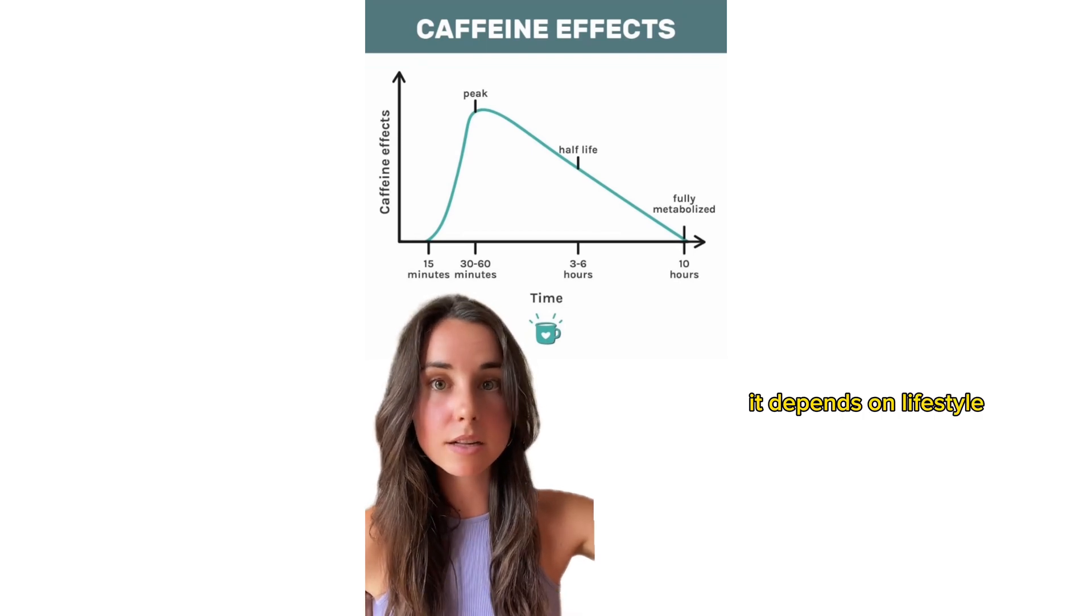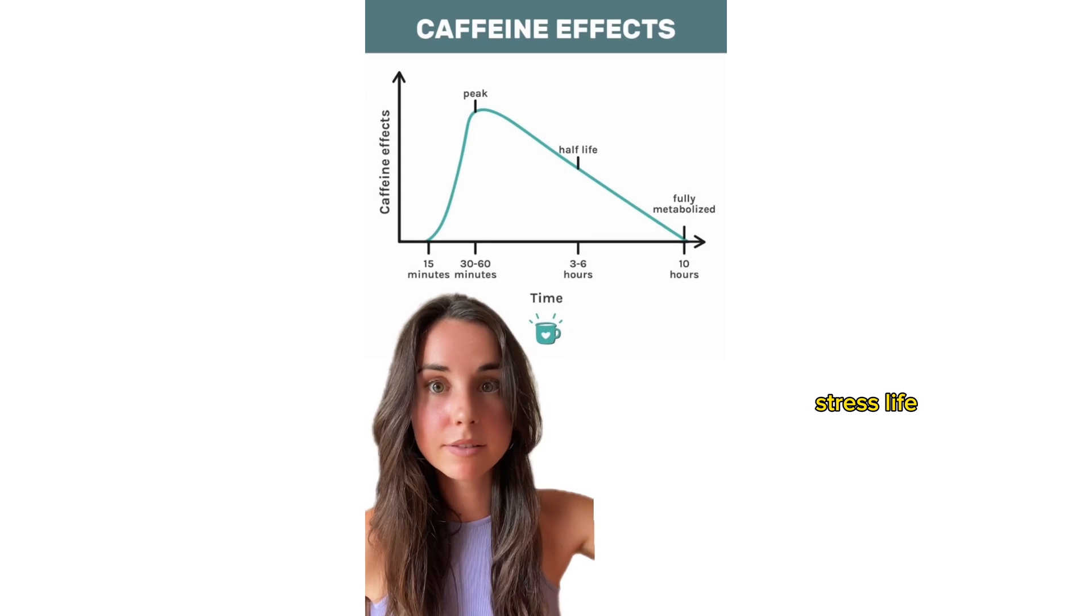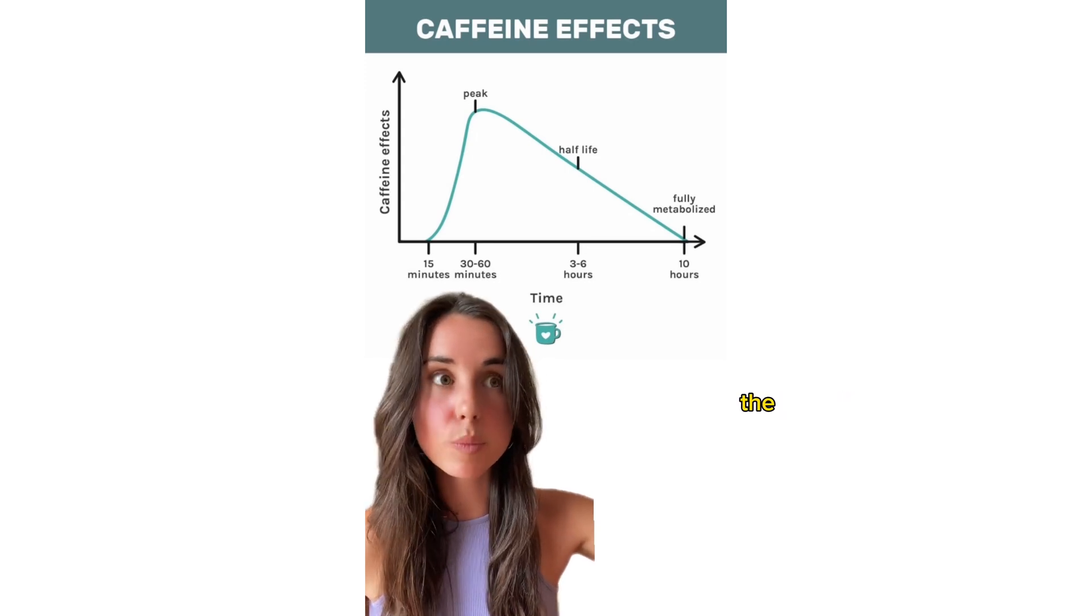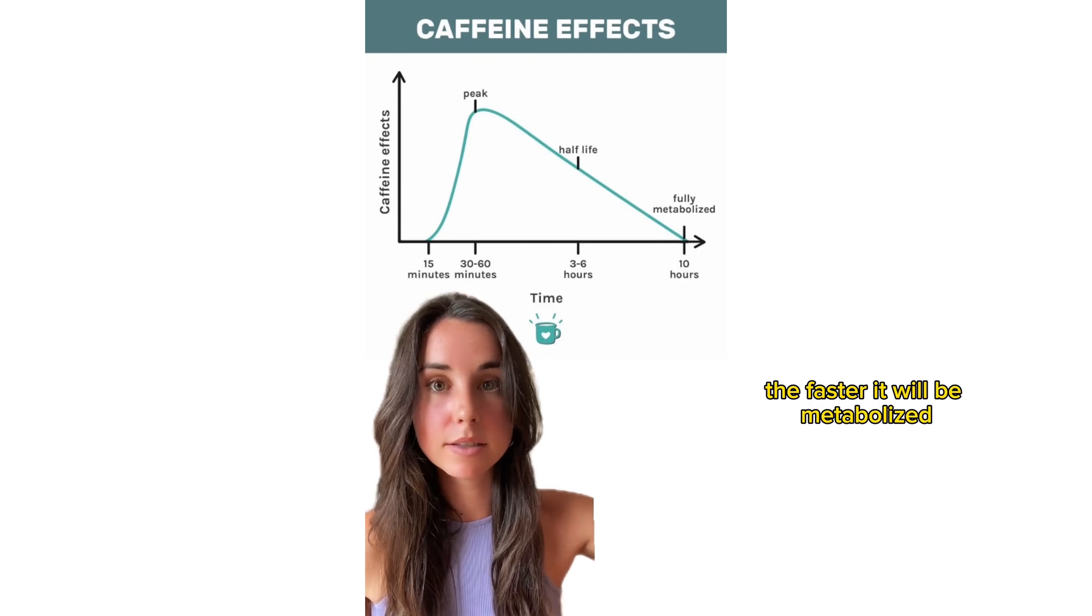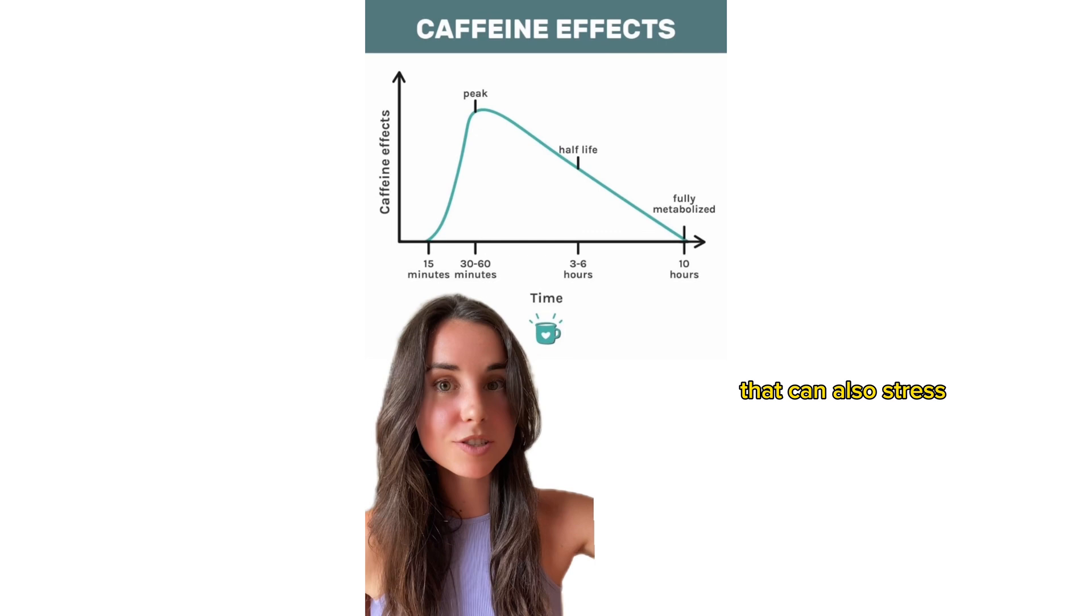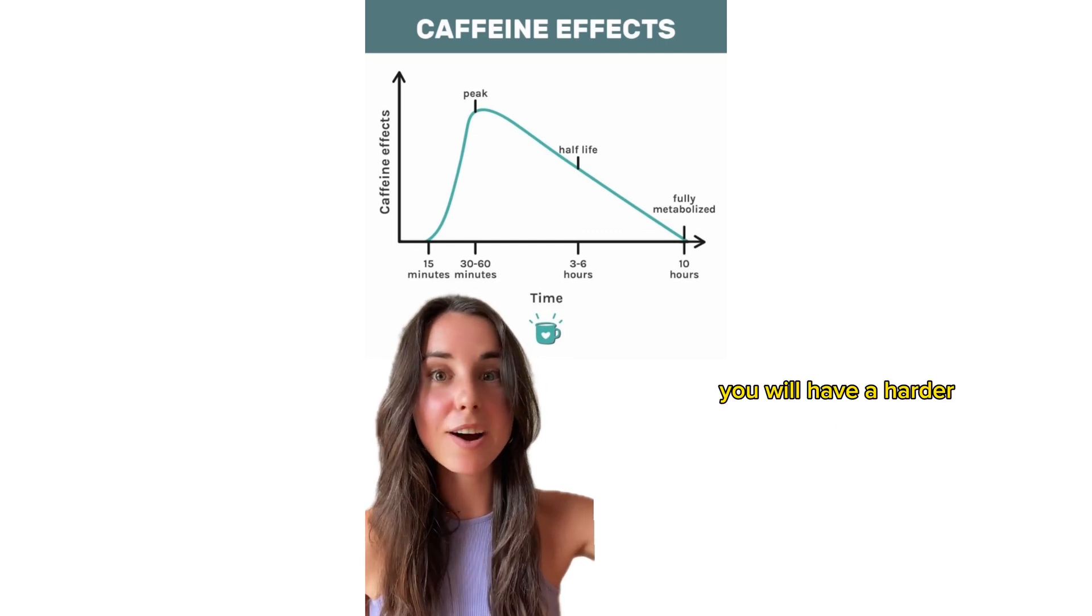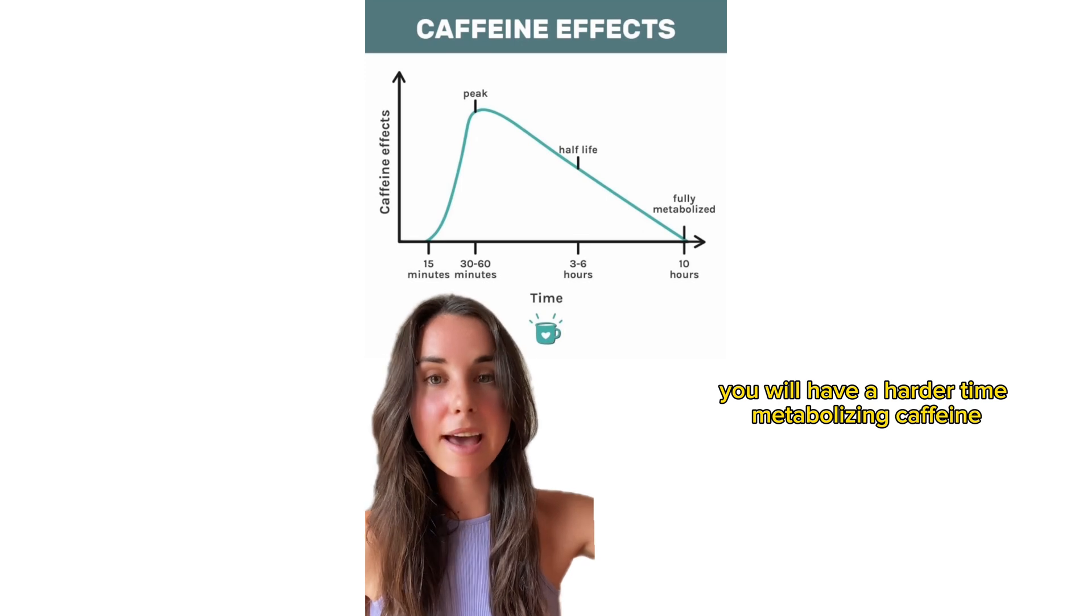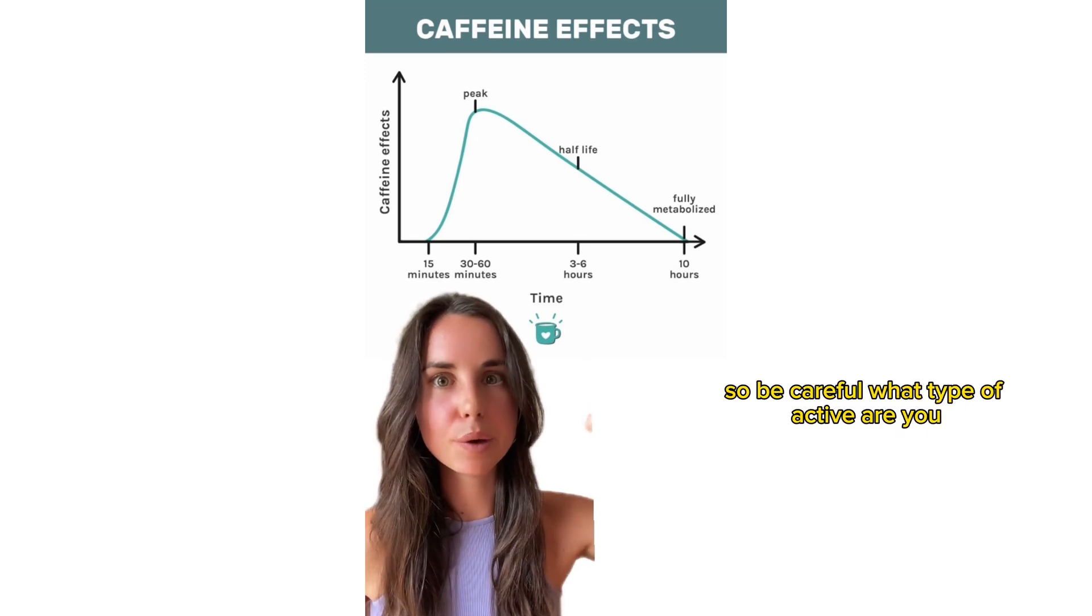It depends on lifestyle, environmental factors, stress, how active you are. The more active you are, the faster it will be metabolized. Now, if you're very active, that can also stress the body, and therefore you will have a harder time metabolizing caffeine. So be careful what type of active are you.